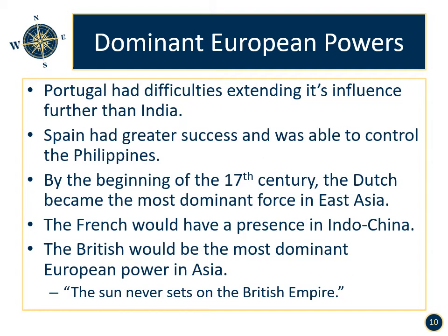Dominant European powers. Portugal had difficulties extending its influence further than India. Spain had greater success and was able to control the Philippines. By the beginning of the 17th century, the Dutch became the most dominant force in East Asia, establishing a monopoly on trade with Indonesia. The French would have a presence in Indochina, which included Laos, Cambodia, and Vietnam. The British would be the most dominant European power in Asia — the phrase 'the sun never sets on the British Empire' defines how vast the British Empire would become around the world.